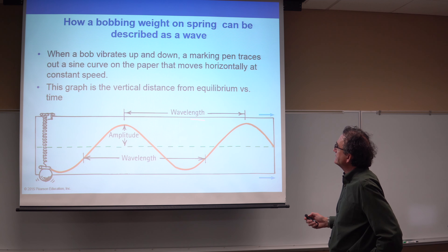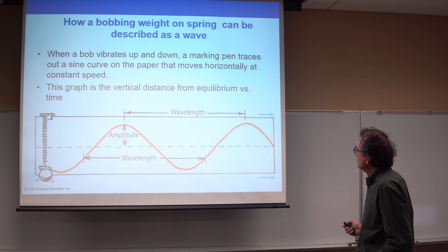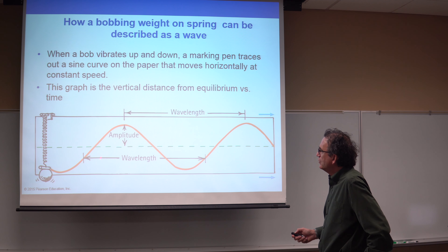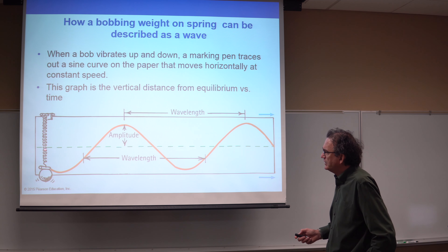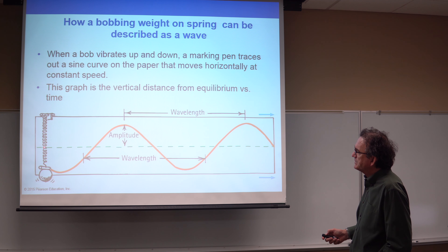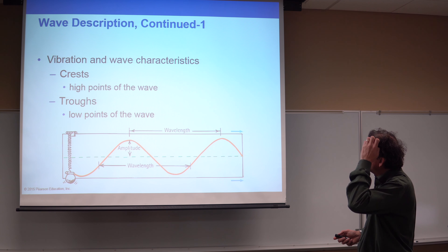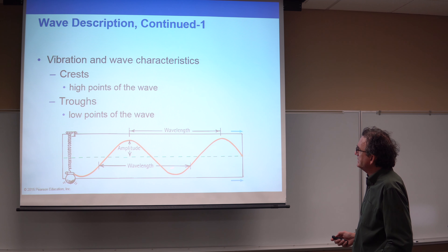When a bob vibrates up and down, a marking pin can trace out a sine curve on paper being moved horizontally at constant speed. The pin is attached to the top of the ball, and the oscillation of the ball going up and down causes the pin to map out what we call a sinusoidal or periodic wave. The dotted green line represents the point of equilibrium, where the force of gravity is balanced by the spring force. If I pull it down and release it, it bobs up and down.